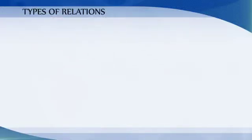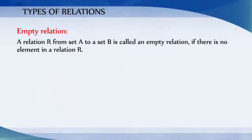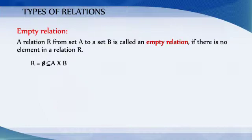Types of relation. A relation R from set A to a set B is called an empty relation if there is no element in the relation R. That is, R is equal to the empty set, which is a subset of the Cartesian product A cross B.